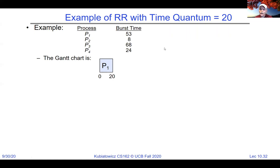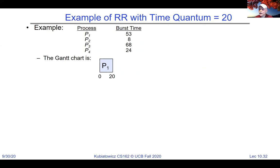Do we know burst time in advance? No — burst time is a prediction about the future, which we'll address shortly. However, after the fact we know how long something ran. P2 only runs for 8 instead of 20 because it finishes early. P3 runs for 20, P4 runs for 20, P1 comes back for another 20, P3 for another 20, and so on. Computed waiting times: P1=72, P2=20, P3=85, P4=88, giving average waiting time of 66.25 and average completion time of 104.5.